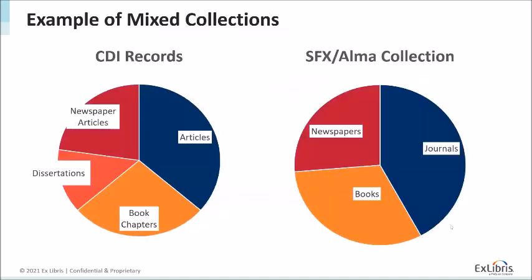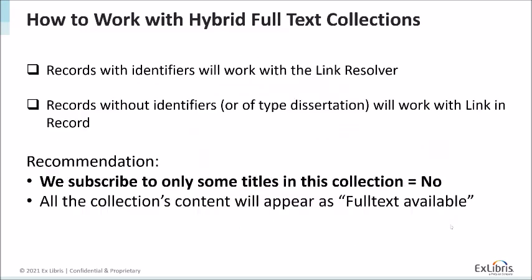You don't need to do anything special to make a collection hybrid — there is no configuration required from your end. This is something we do on our side. We do recommend that after verifying it works for you, you change 'Subscribe to only some titles in this collection' to no, to expose the non-identified content that may have been hidden before.